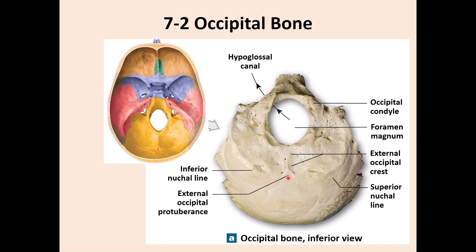You have the external occipital crest and external occipital protuberance. If you touch the back of your head, you may actually feel these areas. You also have some lines here — these are the nuchal lines, one here and one here — and they are bony markings for the attachments of some of the neck muscles.